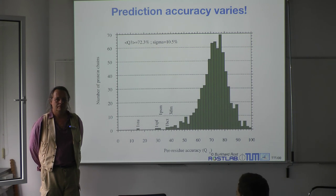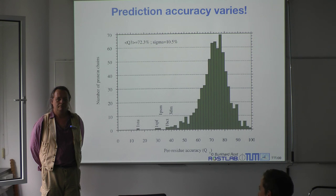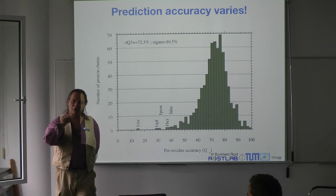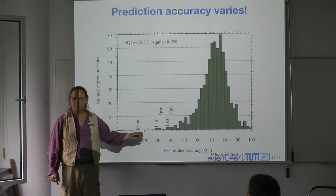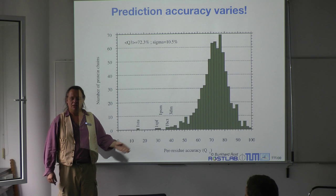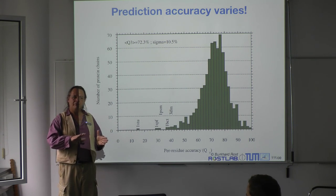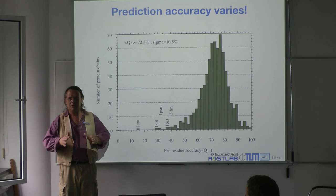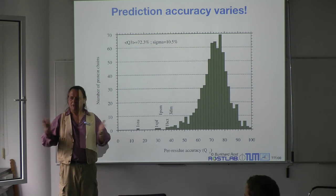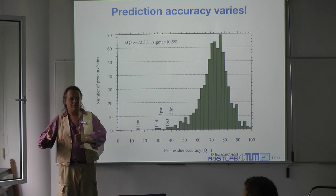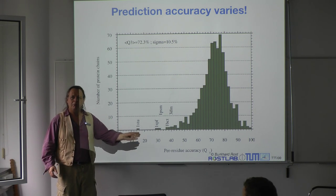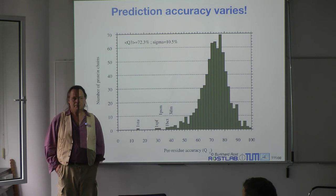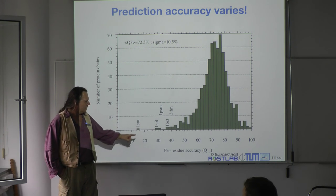One idea: discard proteins with a certain length that are too small. That's a great idea — let's look at performance grouped by length. I looked at proteins between 30 and 50 residues, between 50 and 100, and so on, then plotted the accuracy again. That could help. Unfortunately, it actually didn't work.